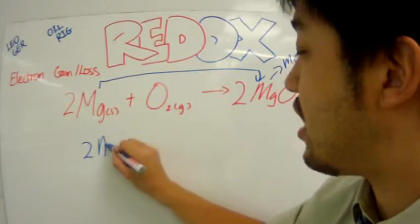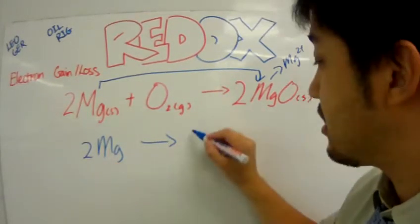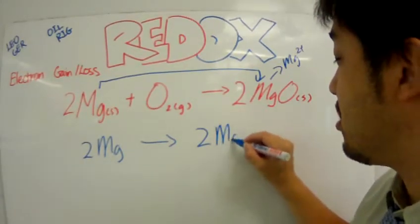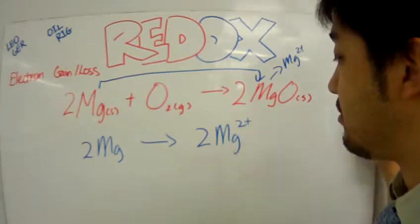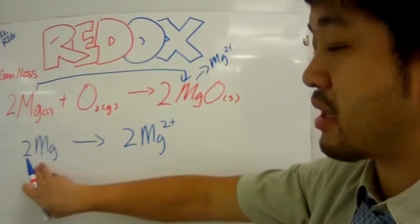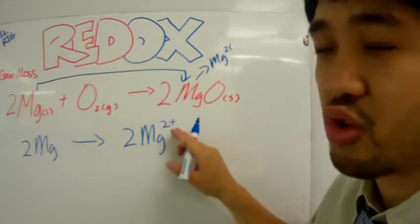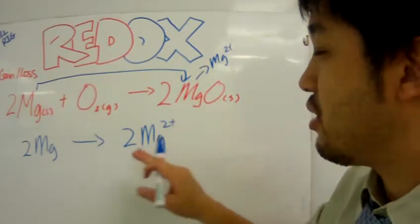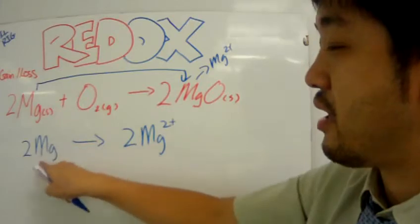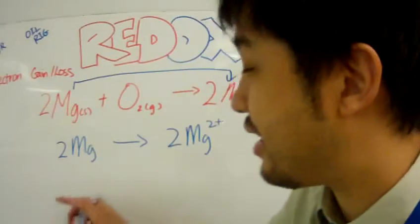We can rewrite the equation as magnesium element changing to magnesium ion. When we look at this equation, we can say that there's two magnesium symbols here, two magnesium symbols here, but with a 2 plus charge up here. And so, the charges on these both sides here are not the same. The elemental charge of magnesium is zero because it's an element.